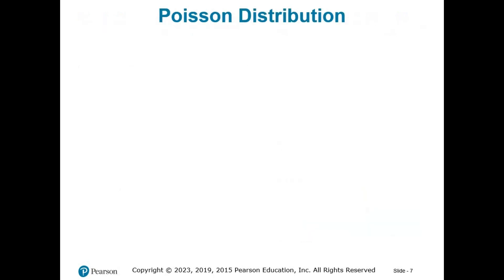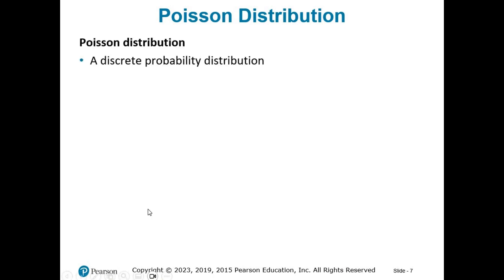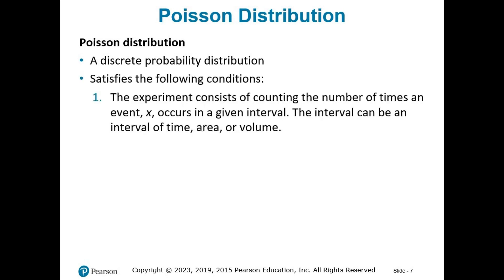Now we're going to talk about the second type: the Poisson distribution. It is a discrete probability distribution, just like the binomial and geometric distributions, and it has three conditions. First, the experiment consists of counting the number of times an event X occurs in a given interval — which can be an interval of time, area, or volume. This is one of the clues that will tell you you're dealing with a Poisson probability distribution.